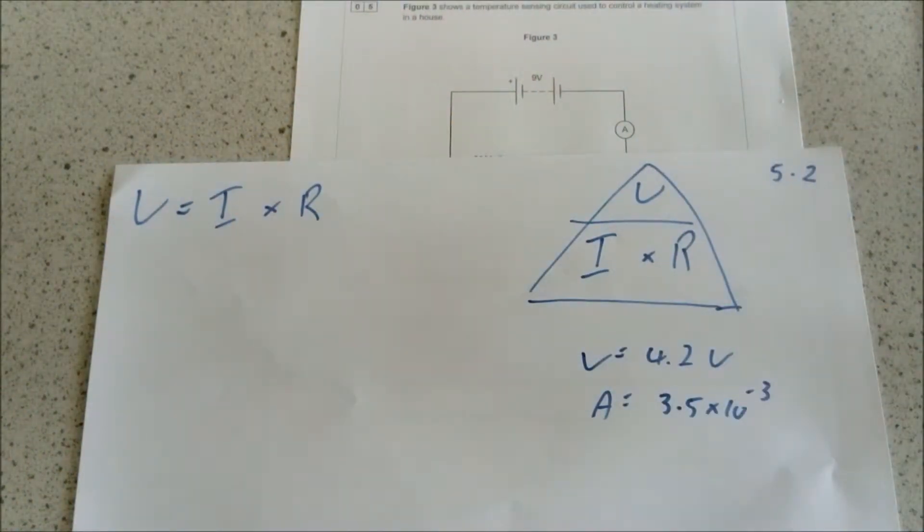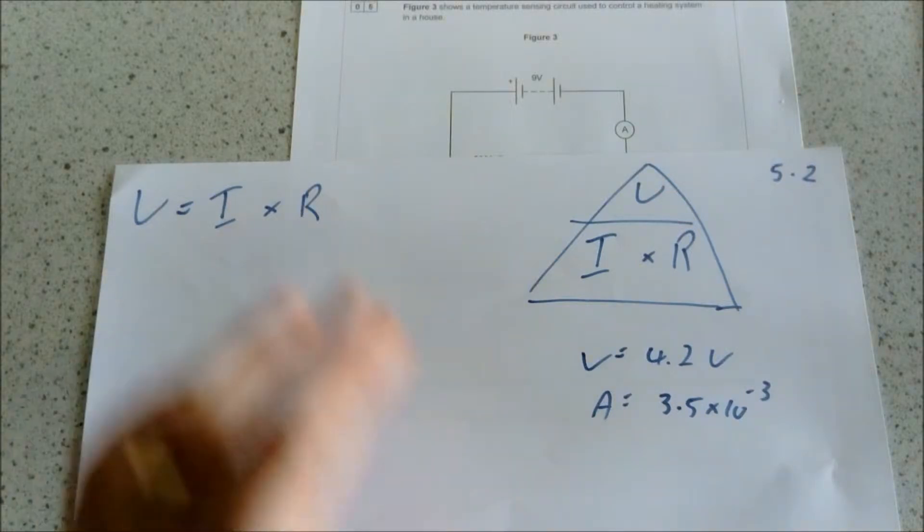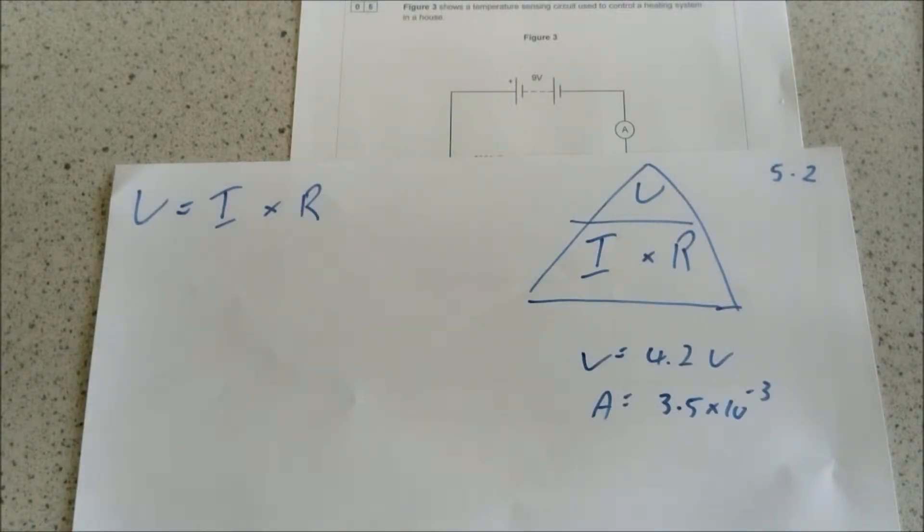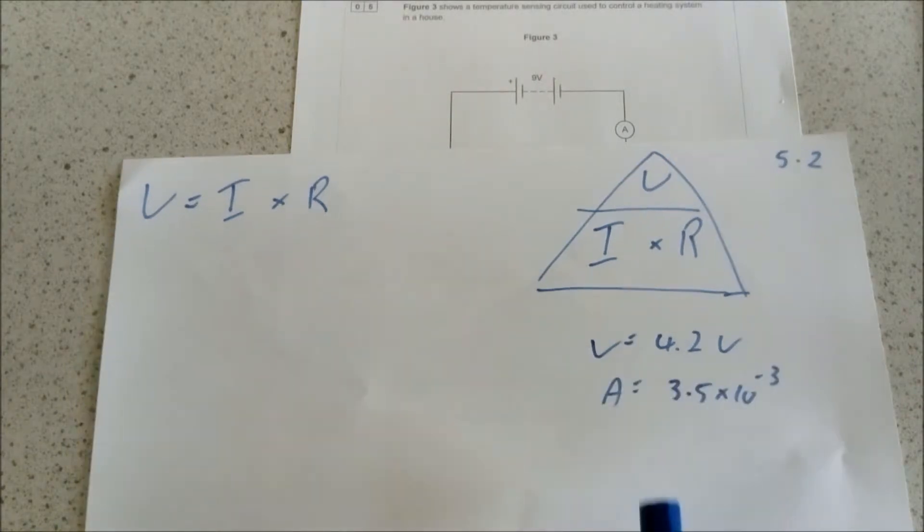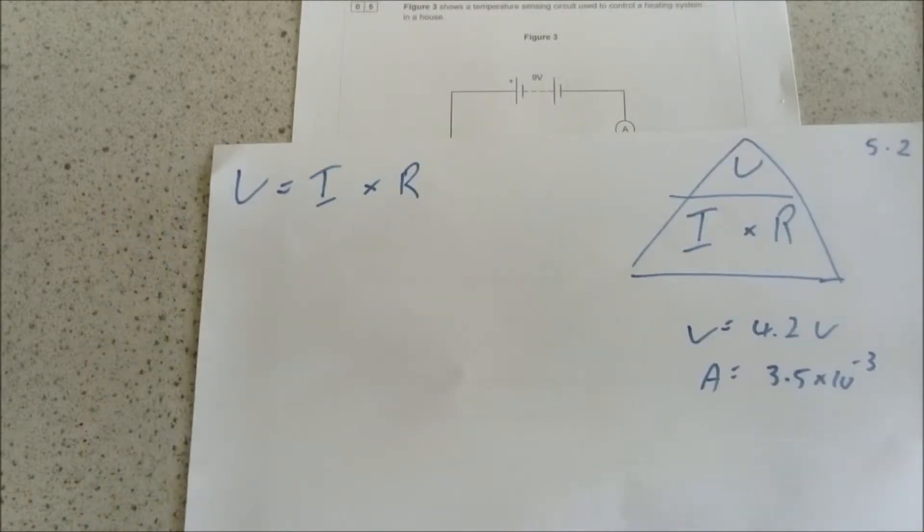Start off with: note down your equation that connects voltage, current, and resistance and put it into your triangle to help you remember. You can then write down the variables that we already know. So we know that the voltage is 4.2 volts and we know that the current is 3.5 times 10 to the power of minus 3 amps.